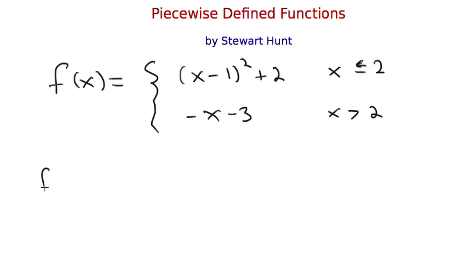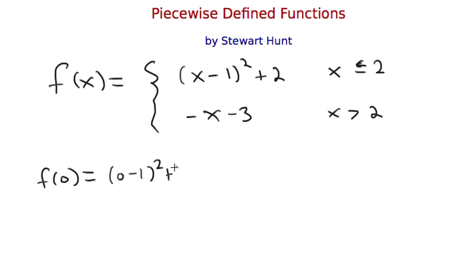If I wanted to evaluate f of 0, I look at the condition part — that tells me which piece to use. Zero is less than or equal to 2, so I look at the first definition. That gives me 0 minus 1 squared plus 2, which is just 3. So f of 0 is 3.